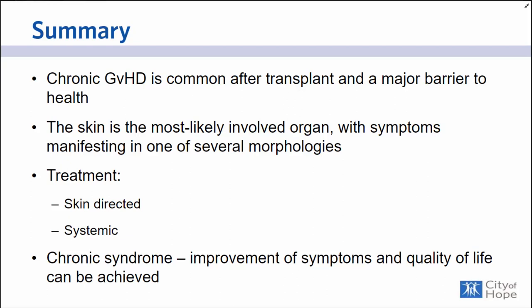In summary, we've broadly reviewed that chronic GVHD is a common condition after transplant and a major barrier to health. The skin is the most commonly involved organ, and symptoms can manifest with one of several morphologies. The treatment for chronic skin GVHD can be skin-directed, systemic therapies, or a combination. Chronic GVHD is a chronic syndrome and has a huge impact on quality of life, but I think with early detection and appropriate treatment and intervention, quality of life can be improved. Thank you. I'm happy to take any questions.